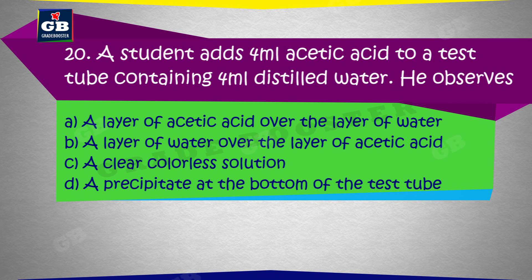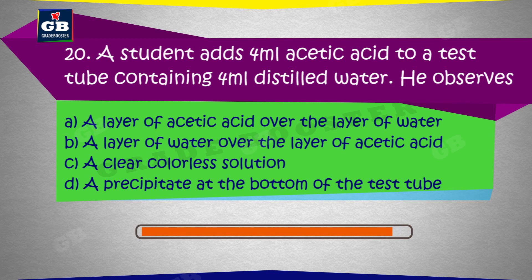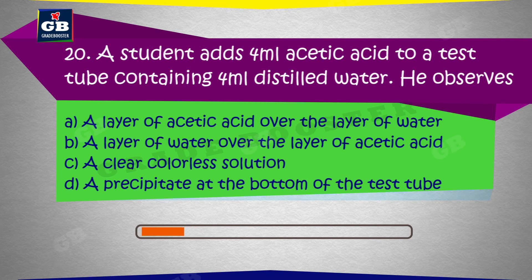A student adds 4 ml acetic acid to a test tube containing 4 ml distilled water. He observes: a) A layer of acetic acid over the layer of water, b) A layer of water over the layer of acetic acid, c) A clear colorless solution, d) A precipitate at the bottom of the test tube.